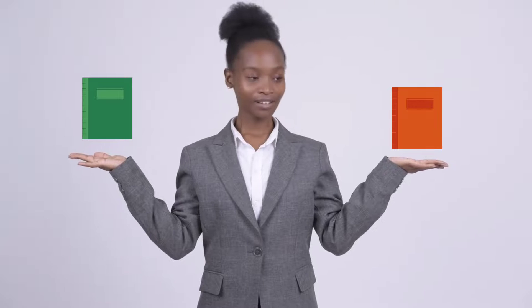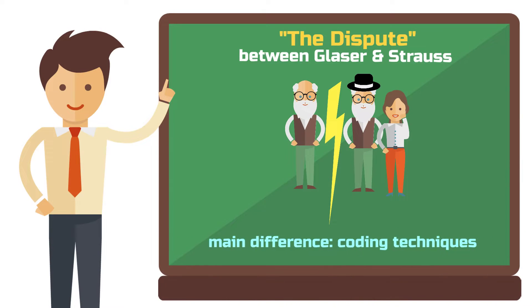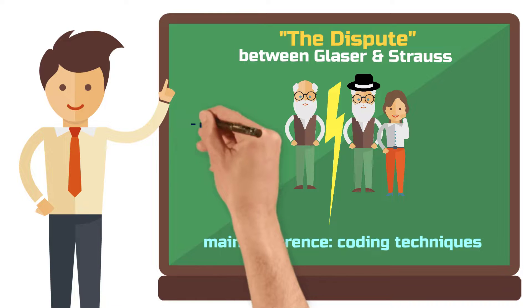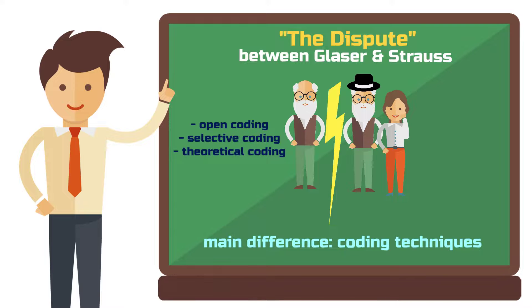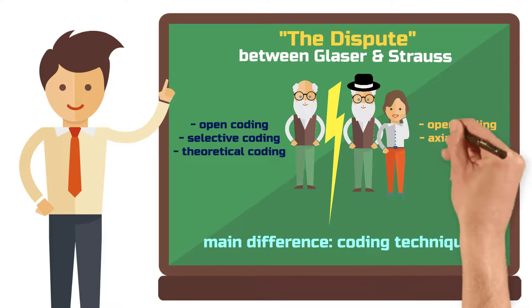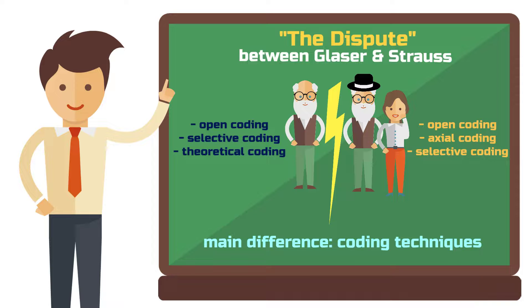Since then, the literature roughly distinguishes between the Glaserian and Straussian approaches. The main difference between the two approaches are the coding techniques. For Glaser, the way to go is to apply open coding, selective coding, and then theoretical coding. Strauss and Corbin, in contrast, recommend to apply open, axial, and then selective coding. If you are interested in tutorials about all of these coding techniques, just let me know in the comments and I will make a little series of videos about them.